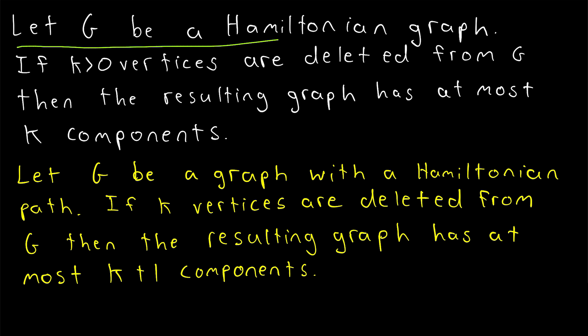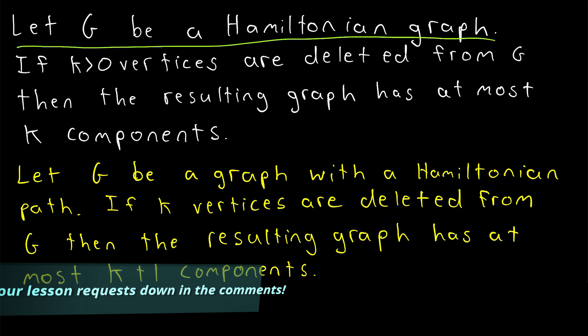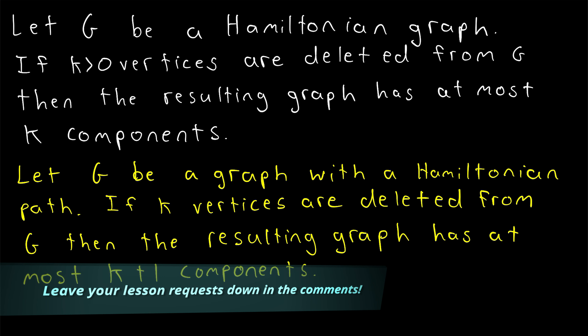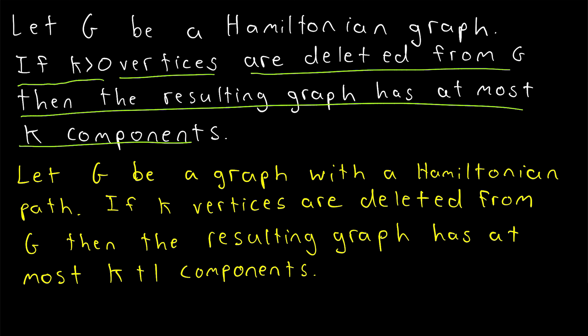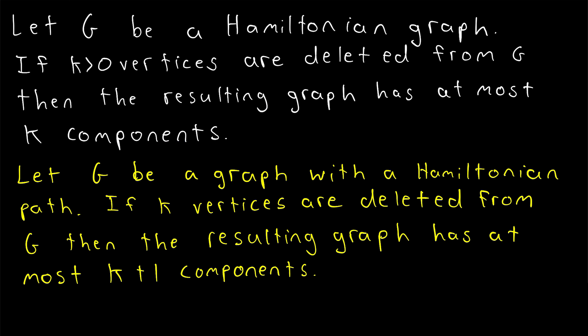Let G be a Hamiltonian graph — a graph containing a cycle that contains all the vertices of the graph. If k greater than 0 vertices are deleted from G, then the resulting graph has at most k components. We'll be proving this necessary condition for Hamiltonian graphs in today's Wrath of Math lesson.